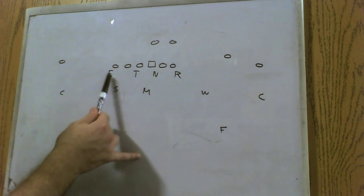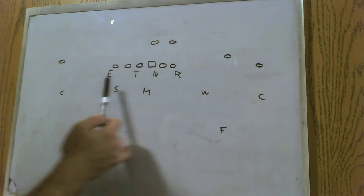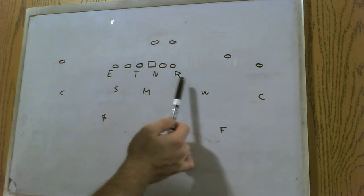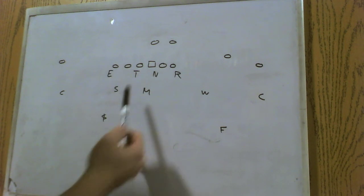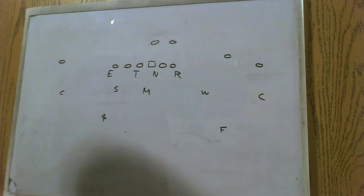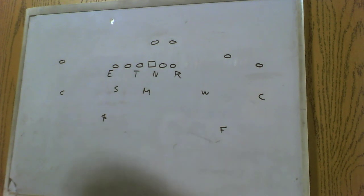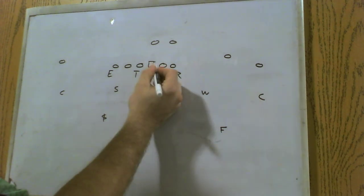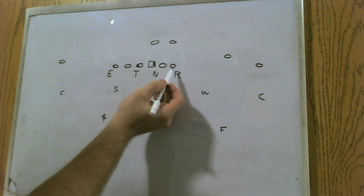Your defensive end, your defensive tackle, nose guard, and rush end. This is their basic front. So, nine technique, which is outside shade of the tight end. Three technique, outside shade of the guard. The tackle on the end aligned to the tight end side. Then you got a nose guard and your rush end, who aligns to the weak side. Nose guard is in a one technique, that is outside shade of the center. And then your rush end, who is in a five technique, which is outside shade of the tackle.